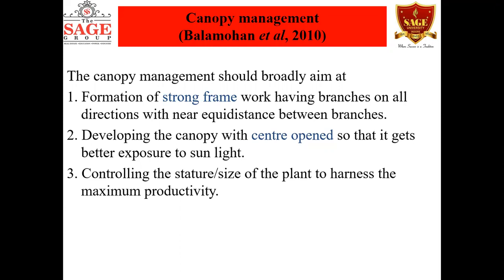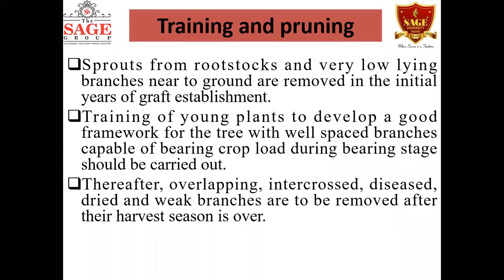Canopy management is done with the aim of developing a strong framework with branches in all directions, with equal distance between branches, and an open center canopy. The center should be open for better exposure to sunlight, which enables better photosynthesis. Controlling the size of the plant helps harness maximum productivity and makes harvesting and cultivation operations easier.